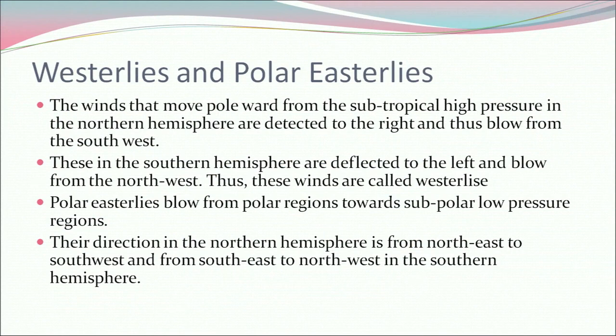The winds that move poleward from the subtropical high pressure in the northern hemisphere are deflected to the right and thus blow from the southwest. In the southern hemisphere they are deflected to the left and blow from the northwest. Thus these winds are called westerlies. Polar easterlies blow from polar regions towards subpolar low pressure regions; their direction in the northern hemisphere is from northeast to southwest, and from southeast to northwest in the southern hemisphere.